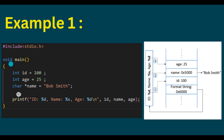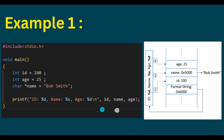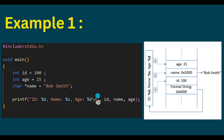This is a simple C code. In the main function, there are three variables declared: id, age, and name. We are going to print that information using a printf function. Whenever a function is called, what the compiler does is it will push the function parameters in reverse order. So first it will push age to the stack, then name, then id, then this string — which is called the format string.